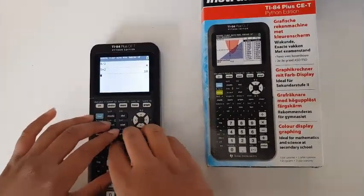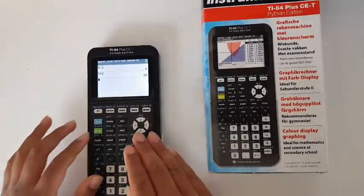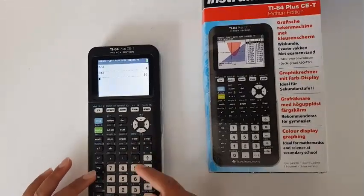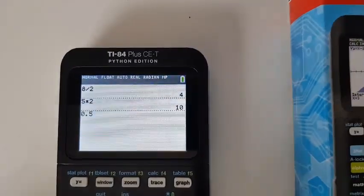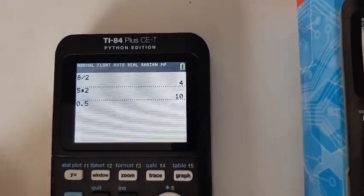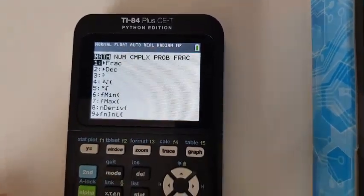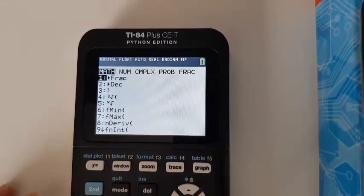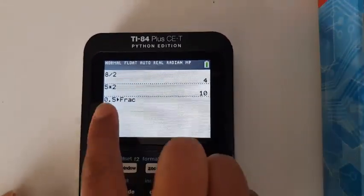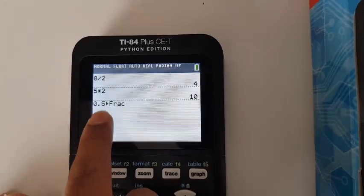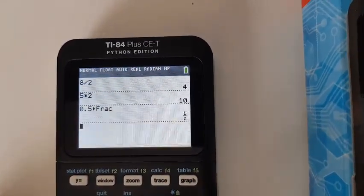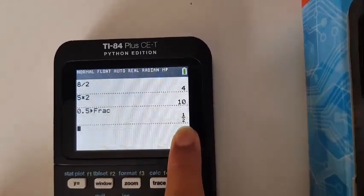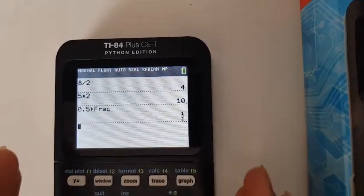Now I would like to get a bit more deep into this. Here we have to convert a decimal point into a fraction. So let's say we have 0.5, and now to convert this into a fraction you will need to press the math button and then fraction enter. Now you can see it says 0.5 you convert into a fraction, and now we can just press enter and there you have 1 by 2.